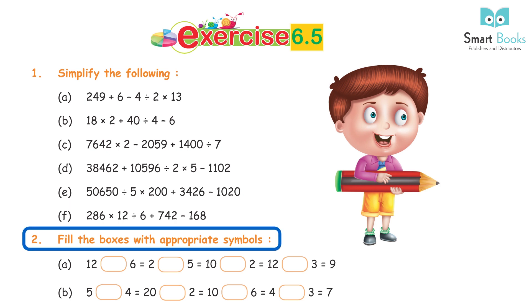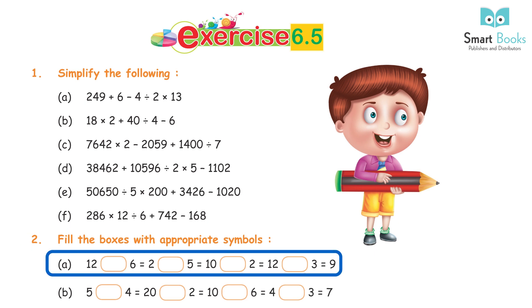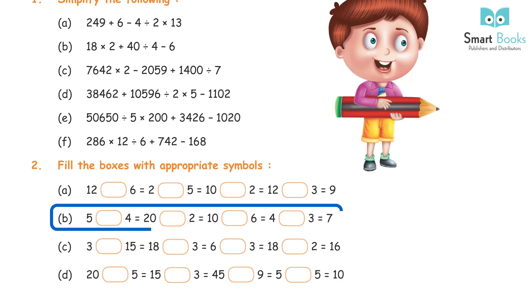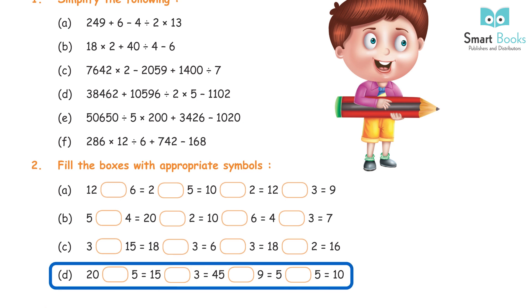Question 2 — fill the boxes with appropriate symbols: a) 12÷6 = 2, 2×5 = 10, 10 + 2 = 12, 12 − 3 = 9; b) 5×4 = 20, 20÷2 = 10, 10 − 6 = 4, 4 + 3 = 7; c) 3 + 15 = 18, 18÷3 = 6, 6×3 = 18, 18 − 2 = 16; d) 20 − 5 = 15, 15×3 = 45, 45÷9 = 5, 5 + 5 = 10.